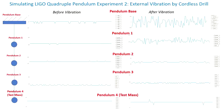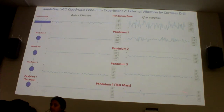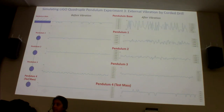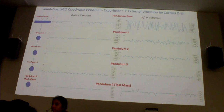The second experiment used a cordless drill. The vibration input is much more than before. Pendulum one still has a lot of vibrations, pendulum two has less, and eventually at pendulum four there are barely any vibrations. Last of all, the corded drill — again a lot of vibration at the top, and at the bottom, very little, almost no vibrations.